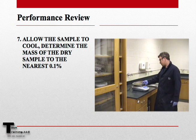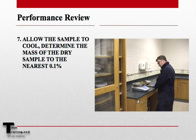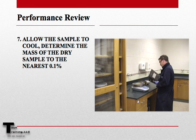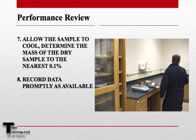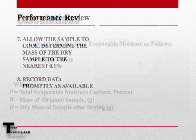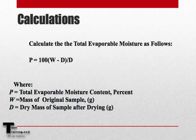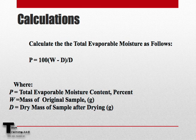It is important to note that these are simply readings and not the mass of the sample after drying. The mass of the sample after drying is not taken until after the sample has had sufficient time to cool. Record this number to the nearest 0.1%, and like all data, record this number promptly. We can now calculate the total evaporable moisture content using the following equation, where P is the total evaporable moisture content in percent, W is the weight of the original sample in grams, and D is the mass of the dry sample in grams.